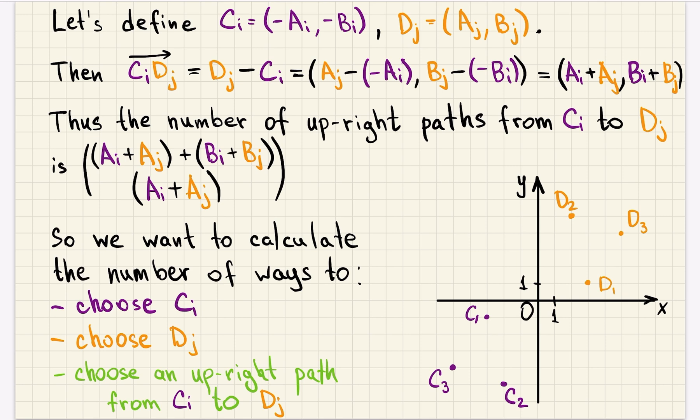Thus, again, we can reformulate what we want to count. We want to count the number of ways to choose i, so it's the same as choose c_i, choose j, it's the same as choose d_j, and then we choose an upright path from c_i to d_j. So that sounds much better now, because basically what we want to count is number of ways to start at some point in this set, and then somehow go upright and end up in one of points in this set.